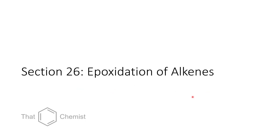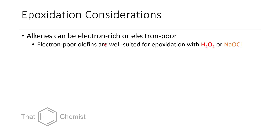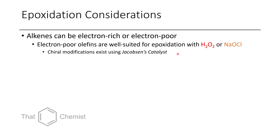Let's get into today's material: the epoxidation of alkenes. An important consideration when epoxidizing an alkene is whether it's electron-rich or electron-poor. Most of the time, if you have an electron-poor alkene, you'll want to use an oxidizing agent such as hydrogen peroxide or sodium hypochlorite. There are also chiral modifications using Jacobsen's catalyst, a manganese catalyst that allows you to access certain enantiomers of a given epoxide.